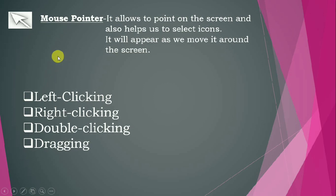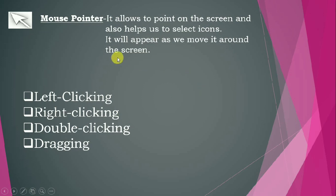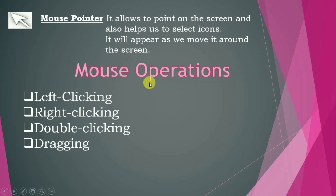The mouse pointer is the arrow which you can see moving on the screen. It allows us to point on the screen and helps to select icons. It appears as we move it around the screen, and as we move the mouse pointer along with our finger, it shows us the different directions in which it is moving.